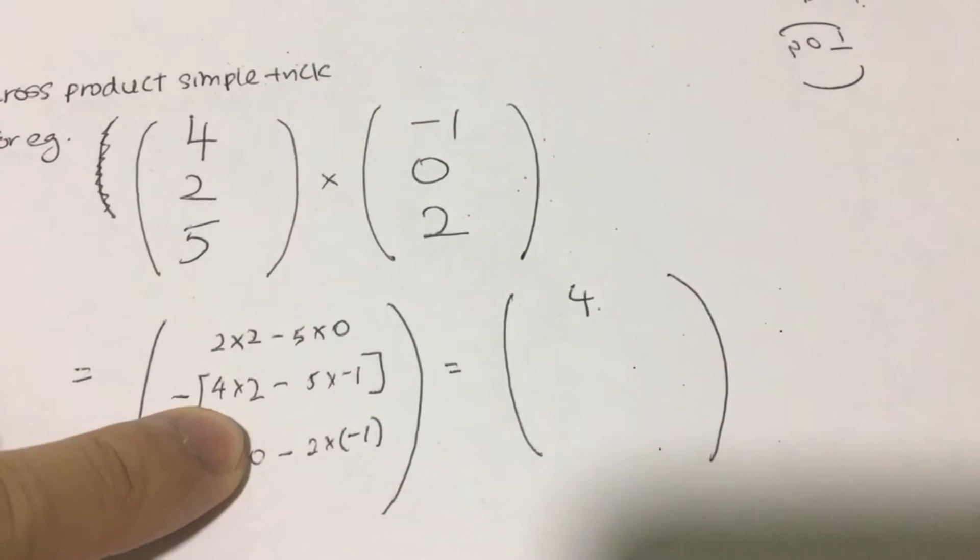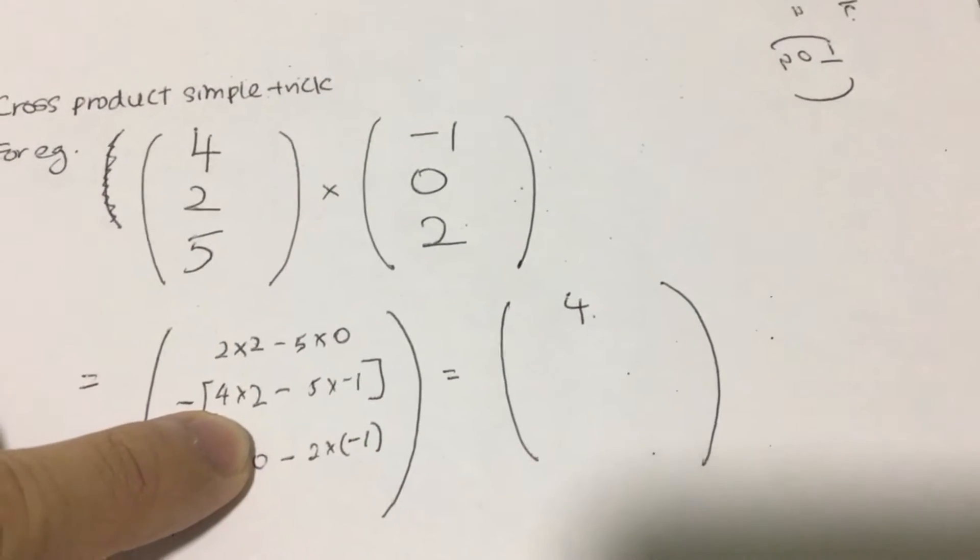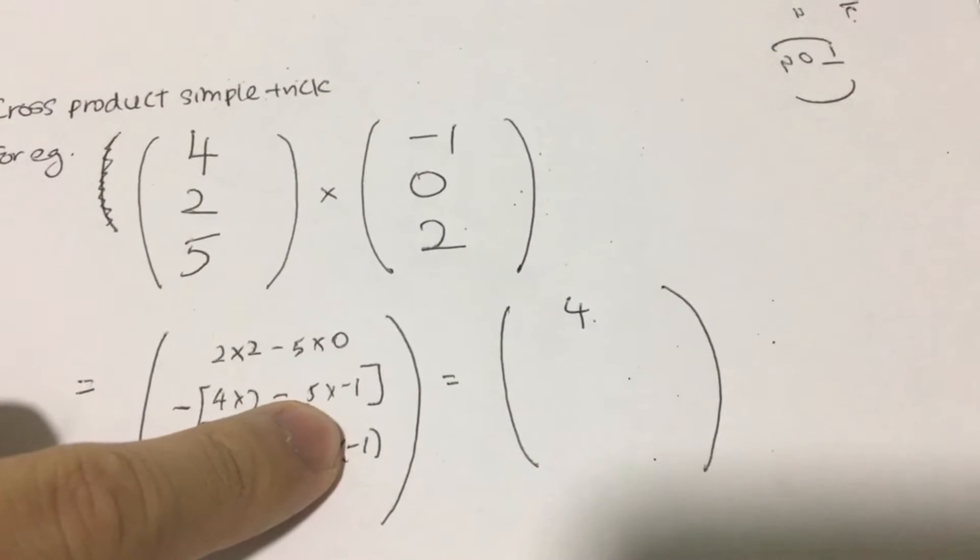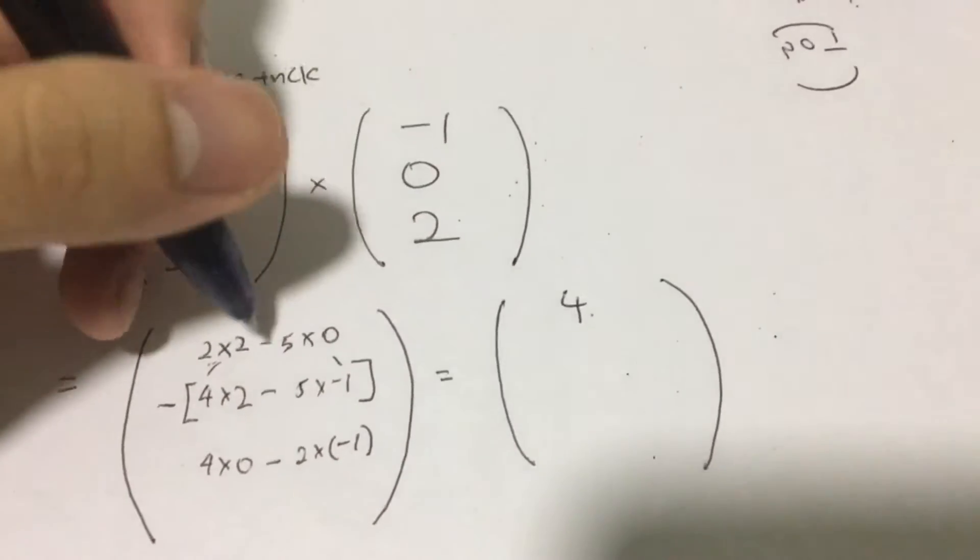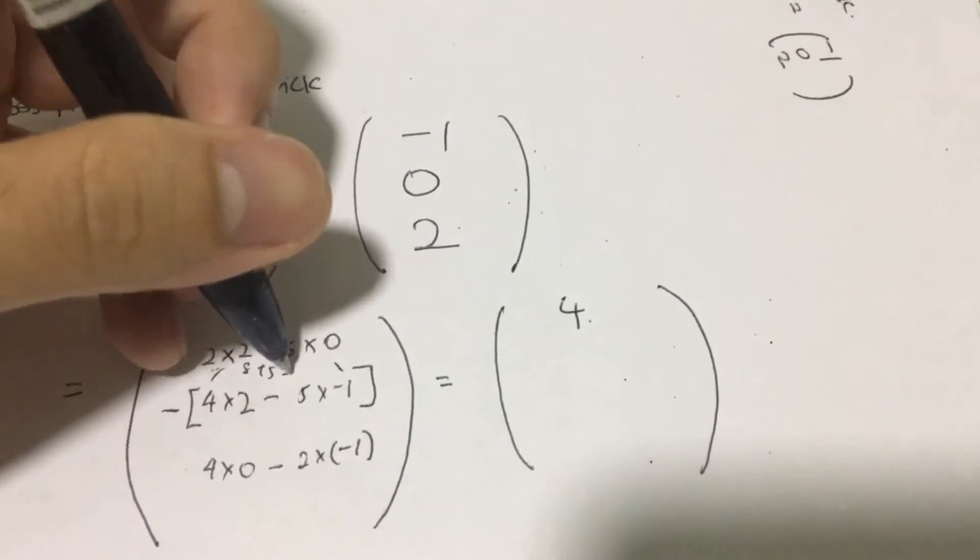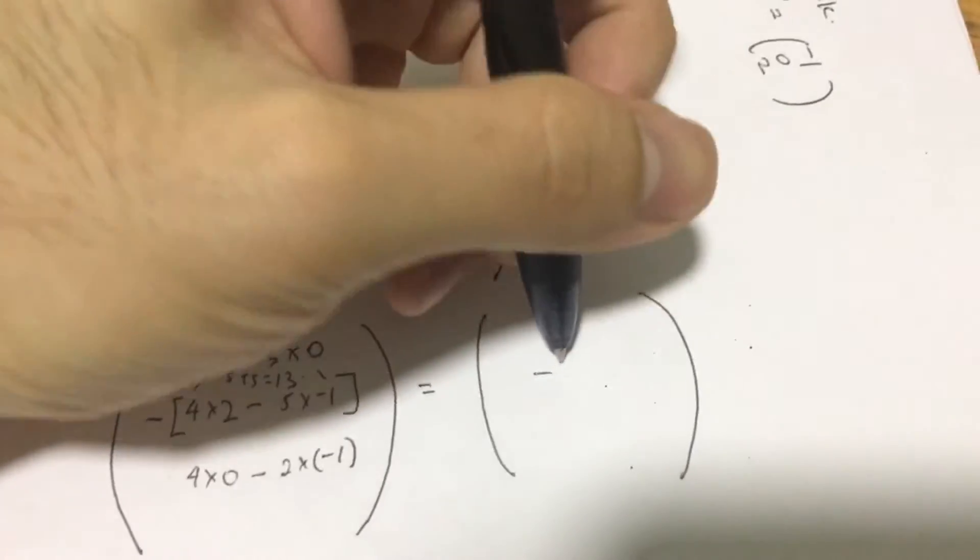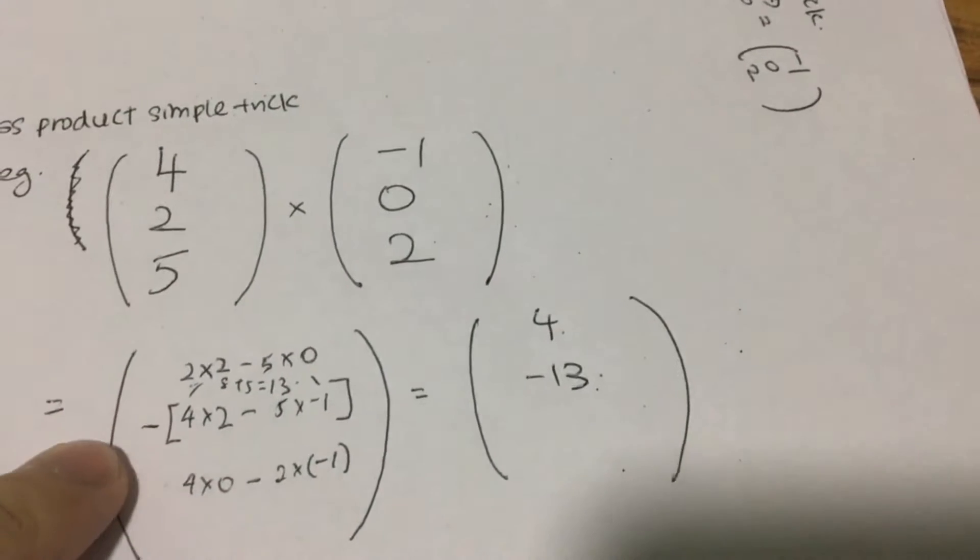And for this bracket, so 4 times 2 is 8 minus 5 times negative 1 is negative 5. So this whole bracket itself is 8 plus 5. So that will be 13 and negative 13, because the minus sign is out there.